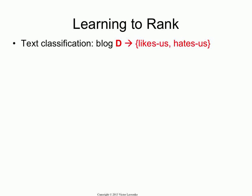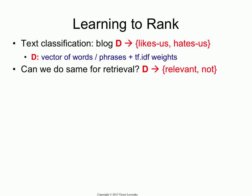So we talked about classification. Just as a recap, classification is when you get a document and you're trying to say which category does it fall into — blog post, do they like us, do they hate us, email, is it ham or spam? D is a vector of words and phrases, TF-IDF weights.